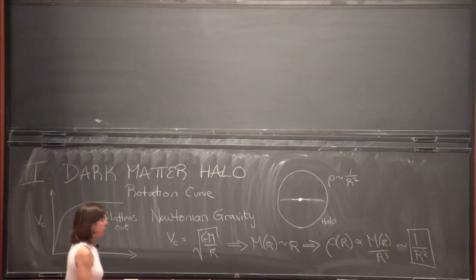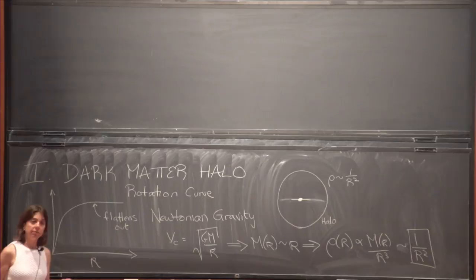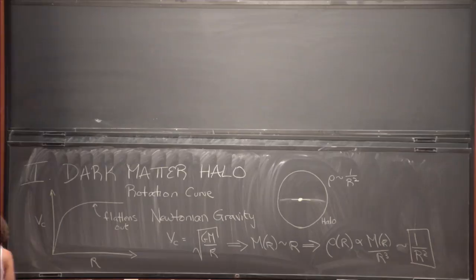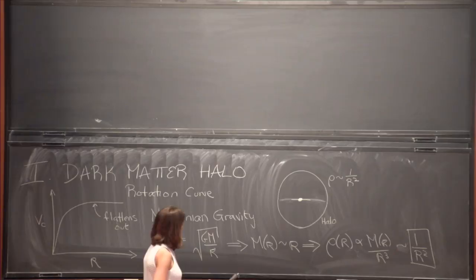I should add the caveat that there are a lot of really interesting models people have been writing down recently where the dark matter does actually interact with itself to some small amount. In these scenarios, you can actually get a small subcomponent of the dark matter to collapse and form something like the baryonic disk. I won't talk too much about those scenarios now, but they're quite interesting.